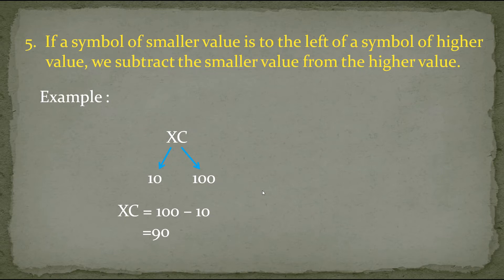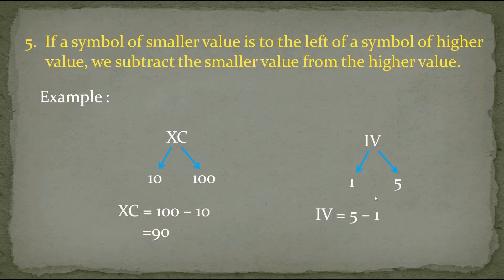Let's take one more example: IV. I is equal to 1 and V is equal to 5. As per this rule, I is written to the left of the higher value, so we subtract: IV is equal to 5 minus 1, which equals 4.